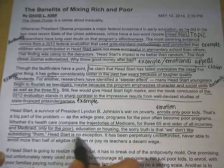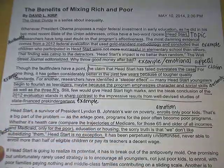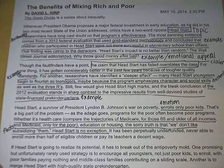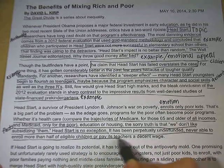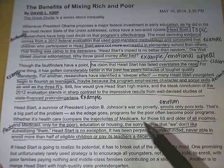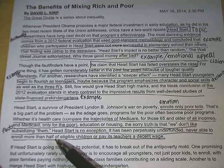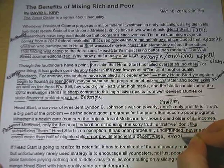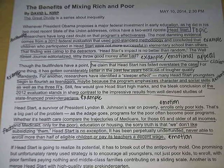After that we see an example with some facts — comparing Medicaid and Medicare: 'Whether it's health care — compare the trajectories of Medicare for those 65 and older of all incomes, and Medicaid only for the poor — education or housing, the sorry truth is that we don't like subsidizing them.' And then lastly, 'Head Start is no exception — it has been perpetually underfunded, never able to enroll more than half of eligible children, or pay its teachers a decent wage.' This is another emotional appeal.